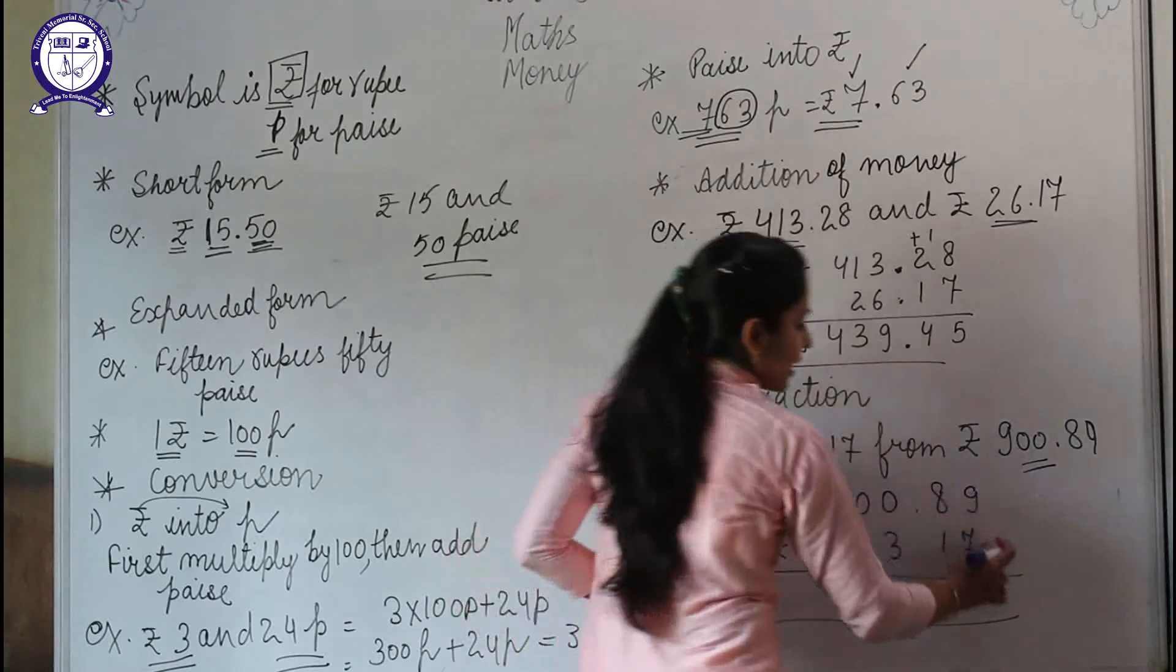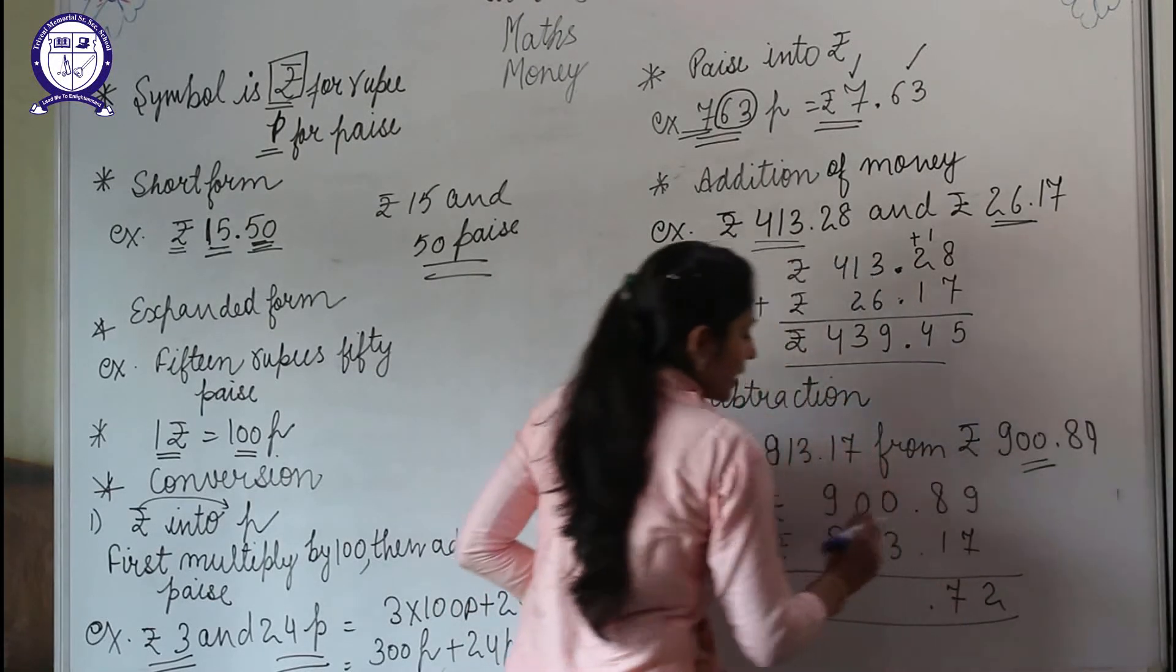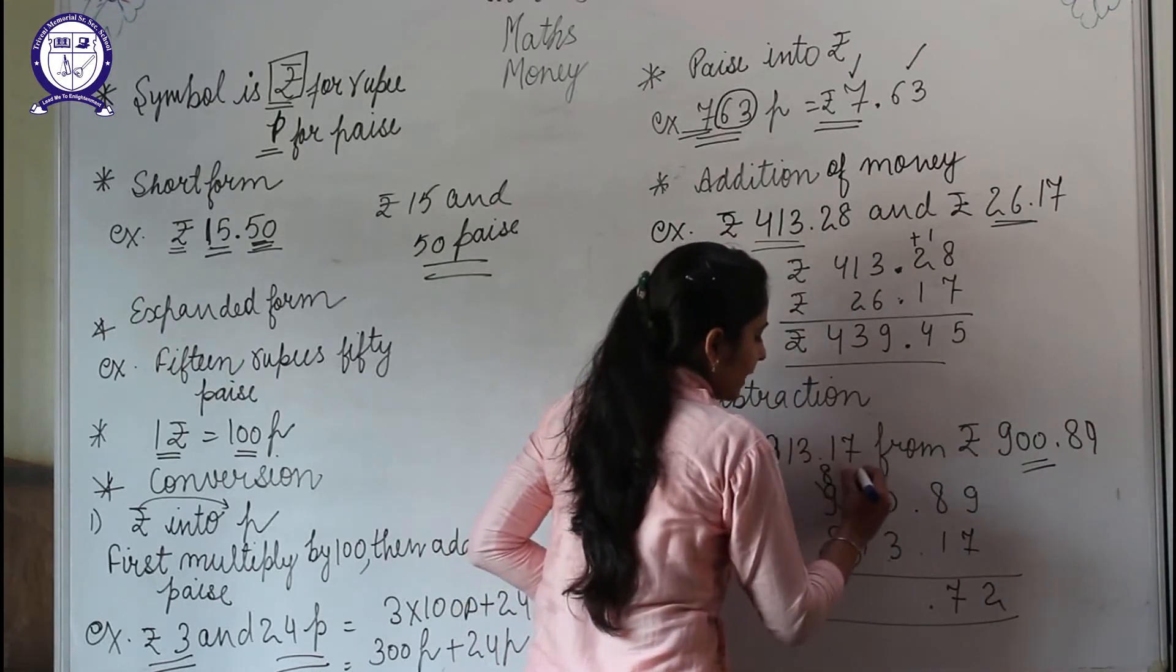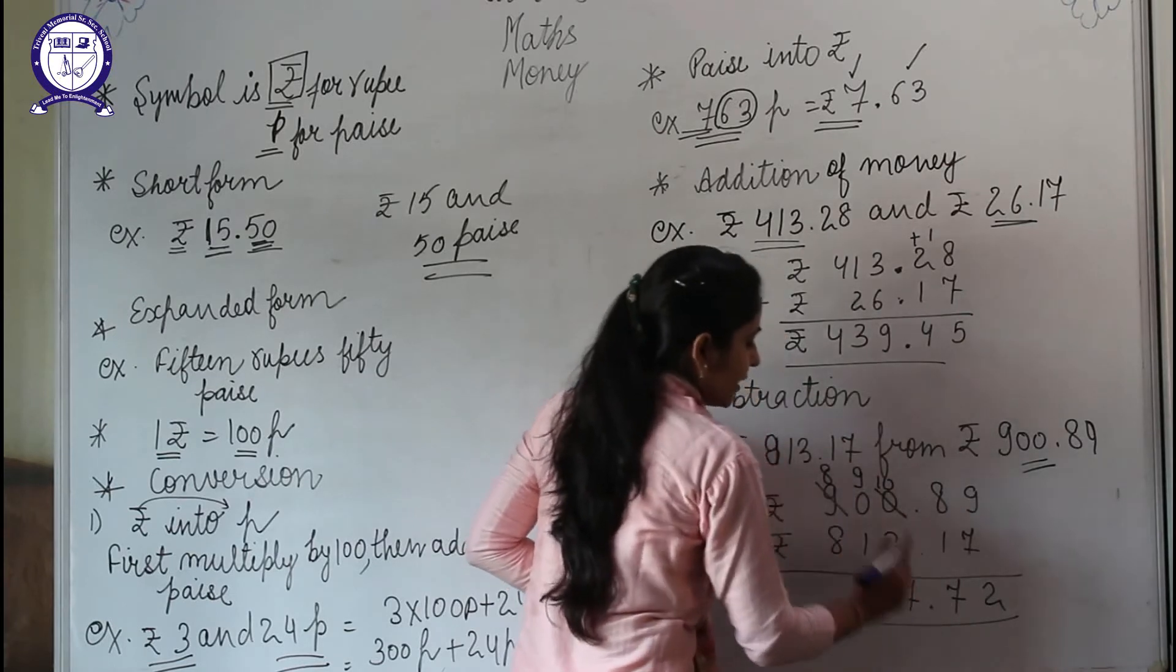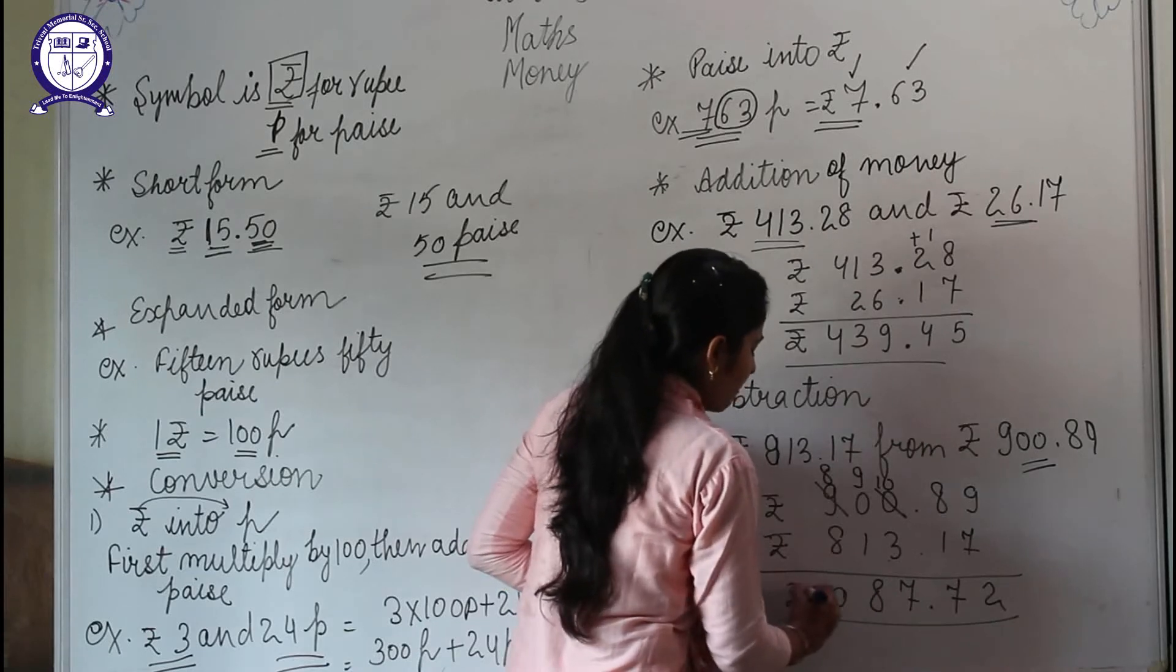have done in addition. So 9 minus 7 is 2, 8 minus 1 is 7, point. We cannot subtract 3 from 0, so we'll take a carry from this—it will become 8, this will become 9, and this will become 10. 10 minus 3 is 7, 9 minus 1 is 8, 8 minus 8 is 0. So the amount left